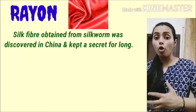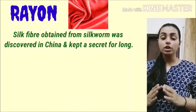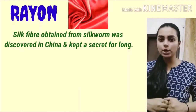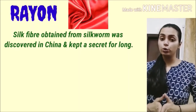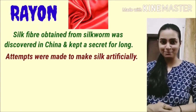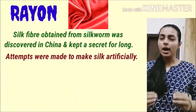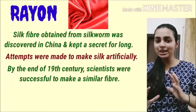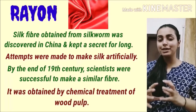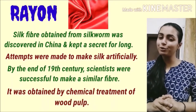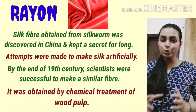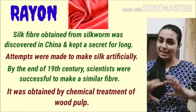Sabse pehle hum baat karenge rayon ki. Silk jo hai, woh silkworm se liya jata hai aur sabse pehle China mein bana. China ne bahut time tak iska raaz apne paas rakha, kisi ko nahi bataya. Kaafi saalon tak logon ne isse replicate karne ki koshish ki, lekin nahi kar paaye. By the end of the nineteenth century, ek milta julta fiber bana liya gaya jise rayon kehte hain. Woh wood pulp ke chemical treatment se bana.